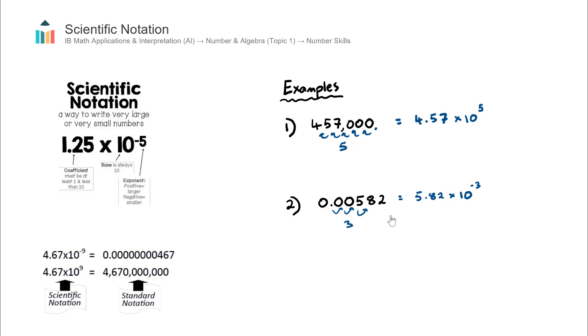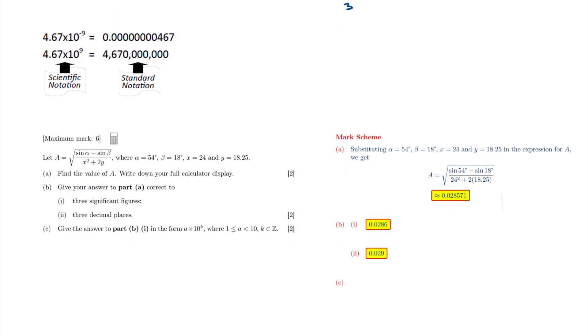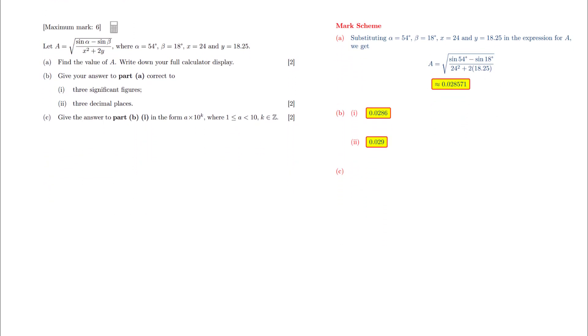There are two examples of how to convert large and small numbers into scientific notation. Let's now have a go at an IB exam question. We're going to focus on part C in this question.